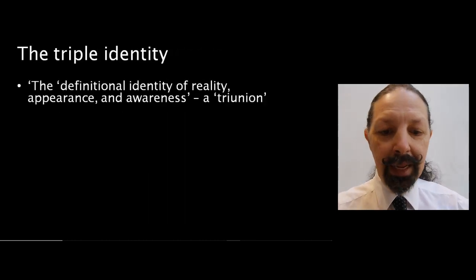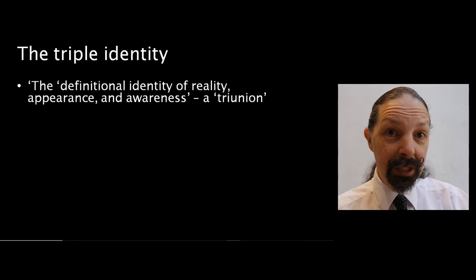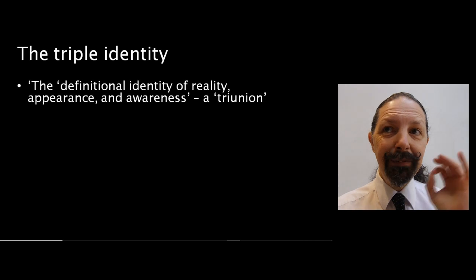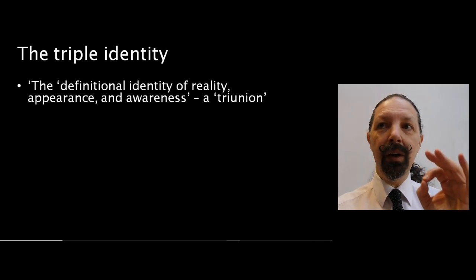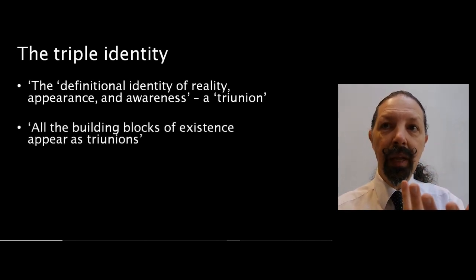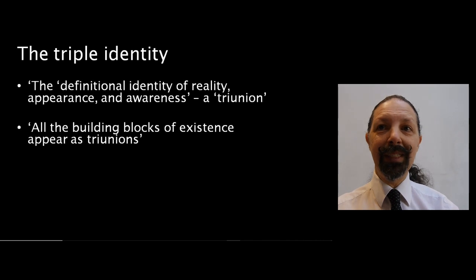Spencer Brown, in the 1994 limited edition of his book, talks about a triple identity, a definitional identity of reality, appearance and awareness. He calls it a triunion, a three in one. And he says all the building blocks of existence appear as triunions.